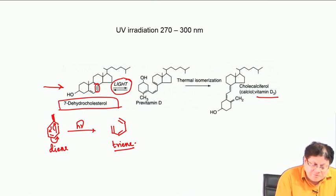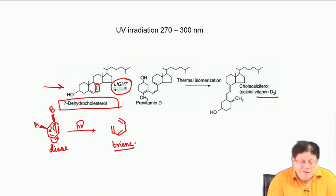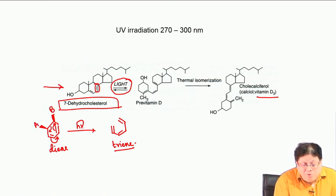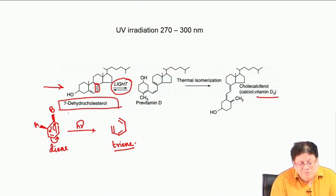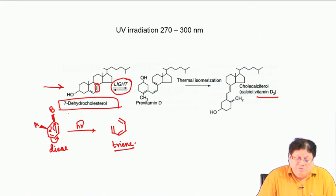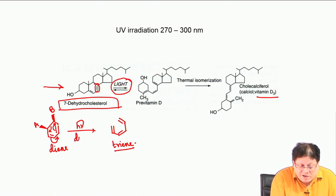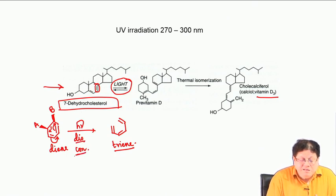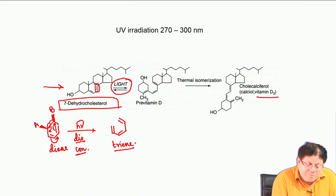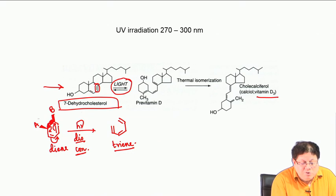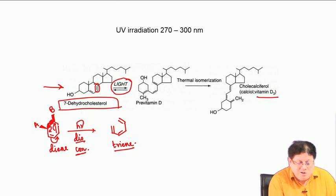If you have substituents A and B, there are two modes by which this electrocyclization or ring-opening process can take place: one is disrotatory and the other is conrotatory. Disrotatory means the orbitals forming the sigma bond move in opposite directions — if one goes clockwise, the other goes anticlockwise.